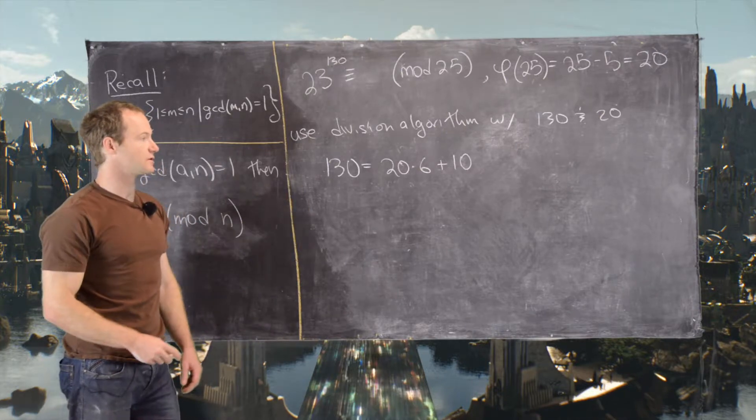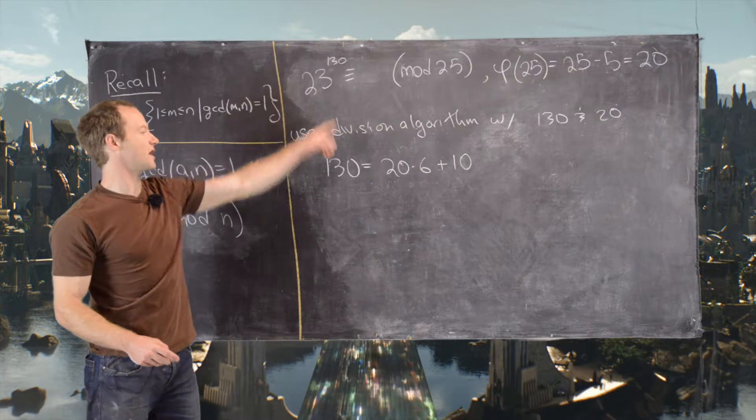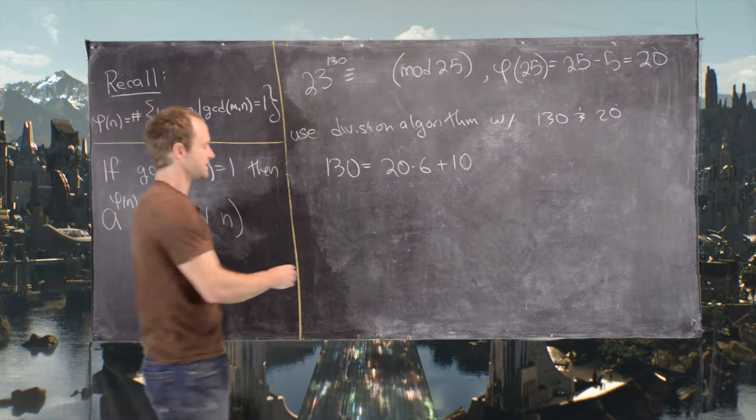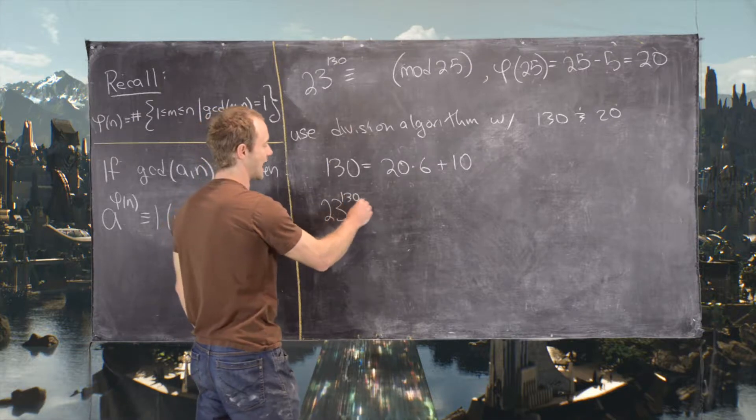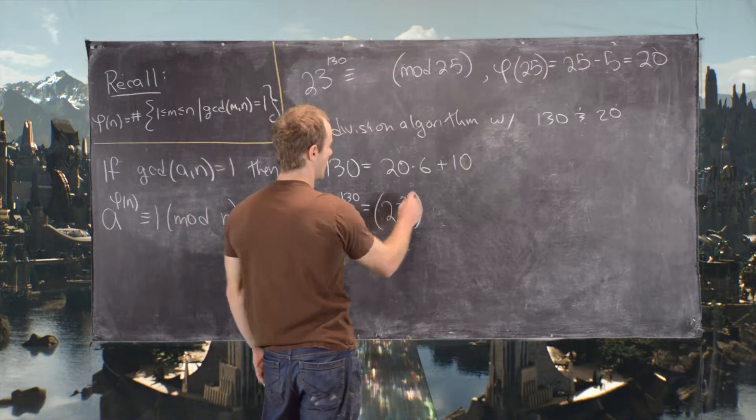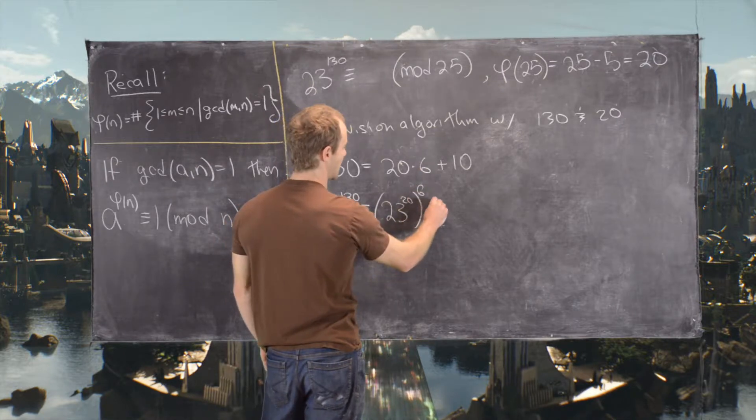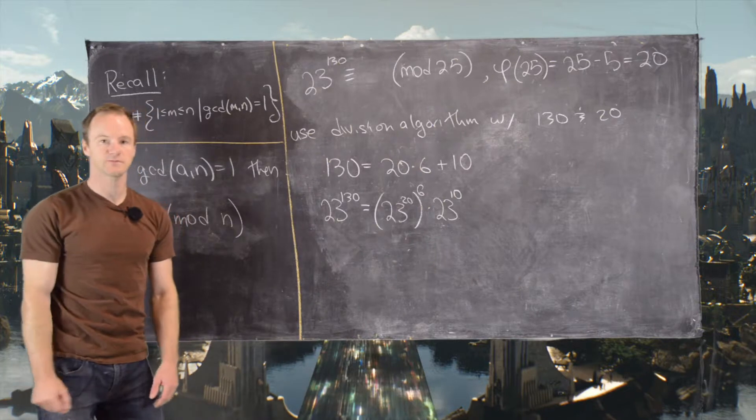Now we'll use exponent rules in order to write 23 to the 130 in terms of these. So here we have 23 to the 130 can now be written as 23 to the 20 all to the 6 power times 23 to the 10. Great.